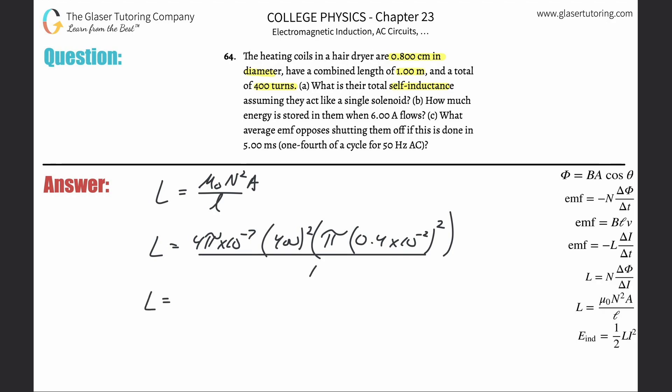So there's going to be 4π—that's 4, 4π—times 10 to the minus 7th, multiplied by 400 squared, multiplied by π, multiplied by 0.4 times 10 to the minus 2 squared.